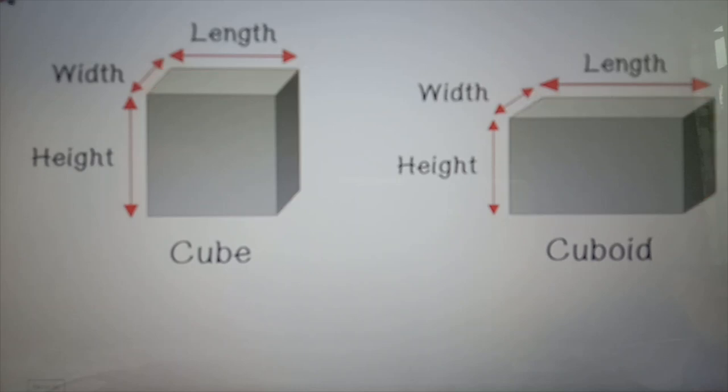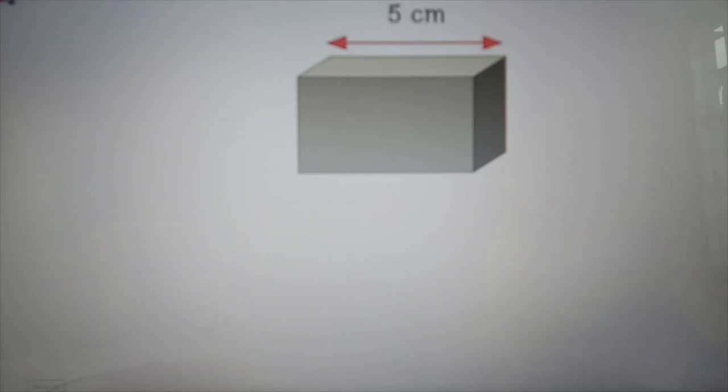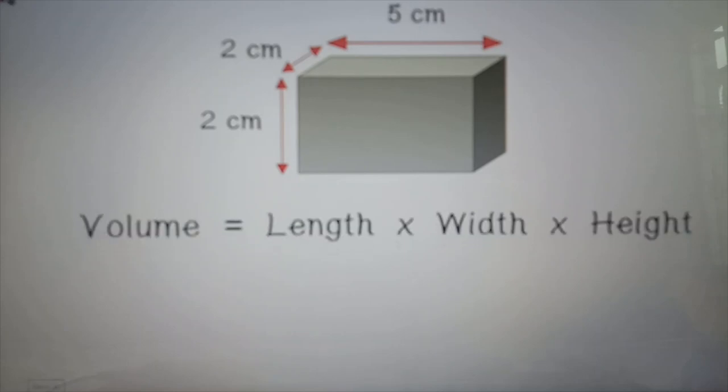To calculate the volume, we must know the length, width, and height. Volume equals length times width times height. For the cuboid in this example, length is 5 centimeters, width is 2 centimeters, and height is 2 centimeters. Using the formula, the volume of the cuboid is 20 cubic centimeters.